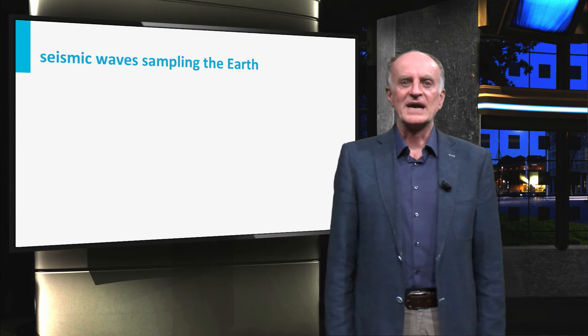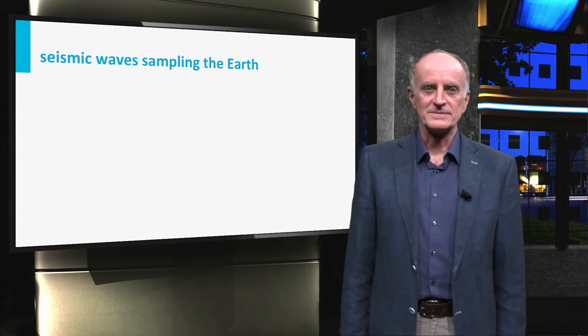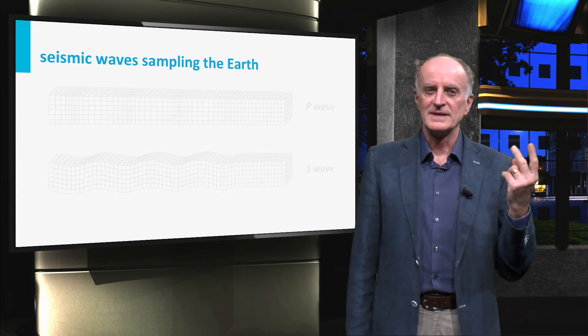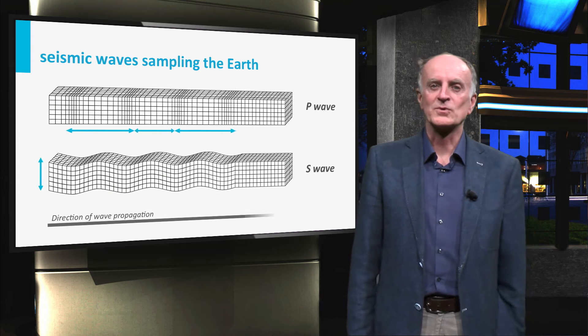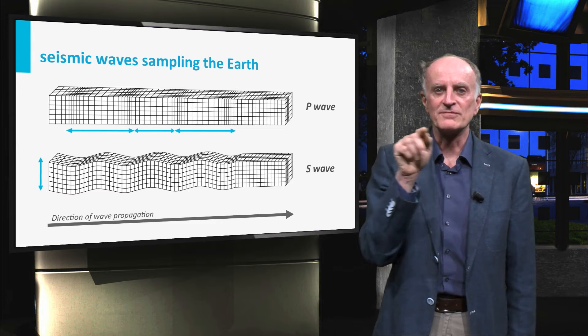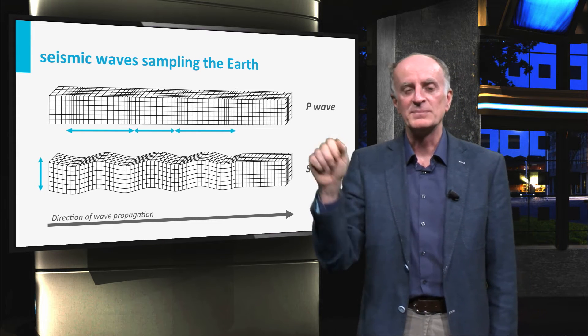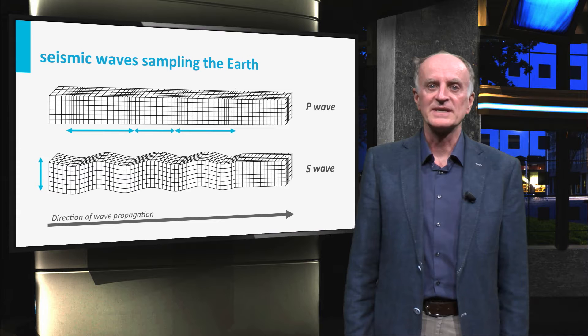Seismic waves are a great source of information and we will make use of them in this course. We will use two types of waves. In P waves, also called pressure or primary waves, the direction of oscillation of rocks is parallel to that of the wave propagation. P waves are thus very efficient and fast.